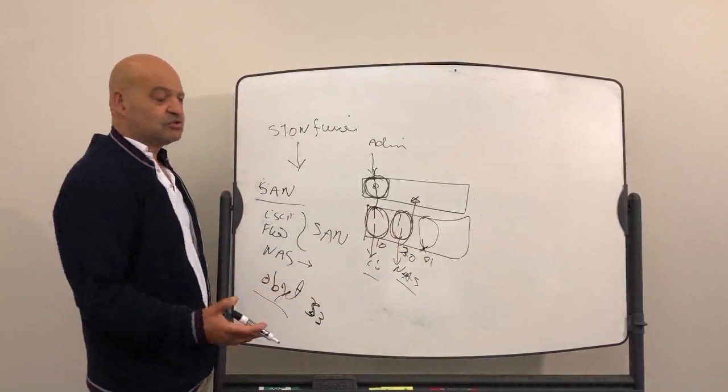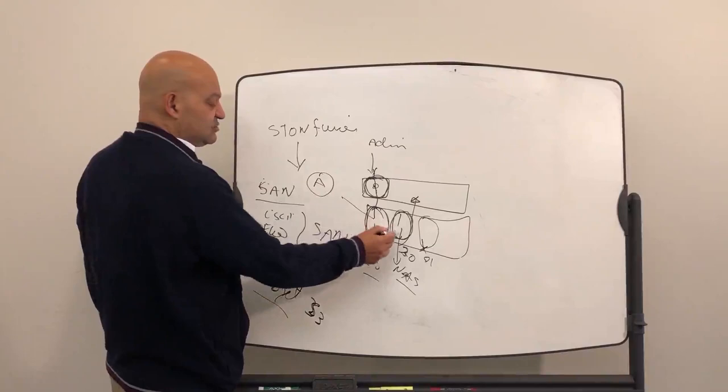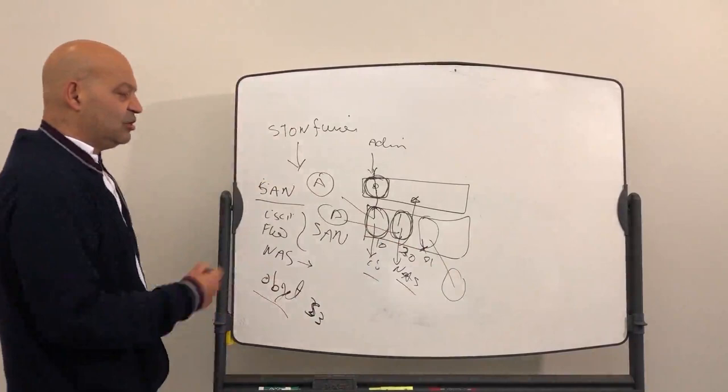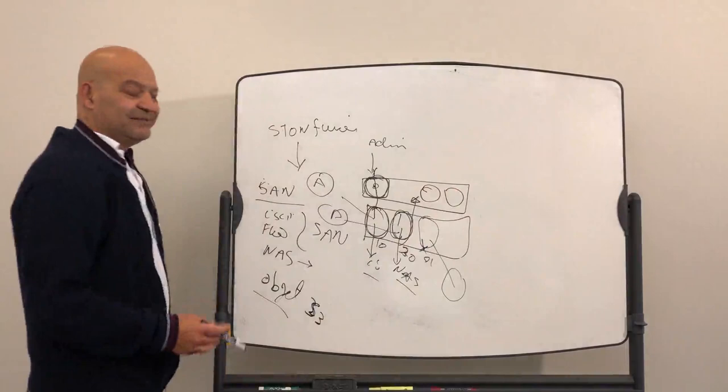And then you can assign this machine, this has actually become a storage machine, and you can assign it to different client A, let's say, and this would be for client B, and so client C, or something. So, and you can have multiple of these, it depends on how much resources we have here.